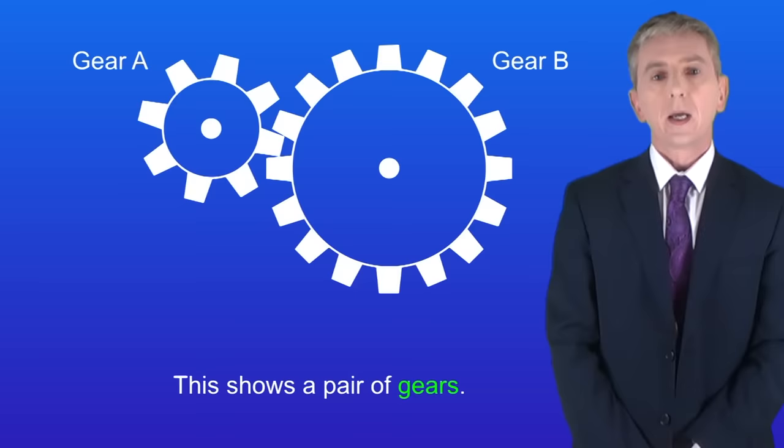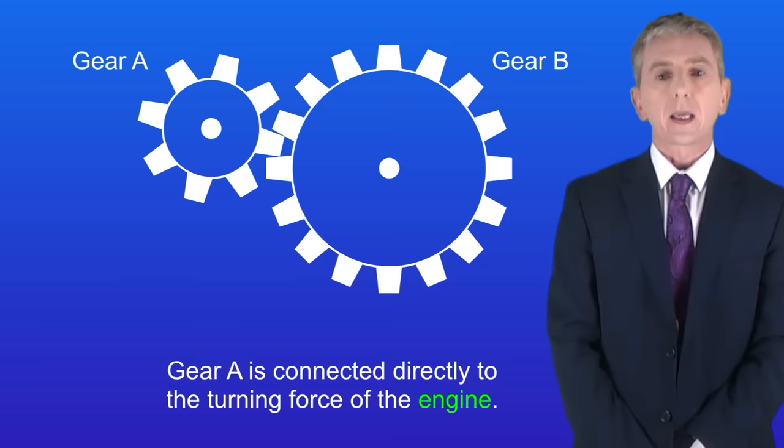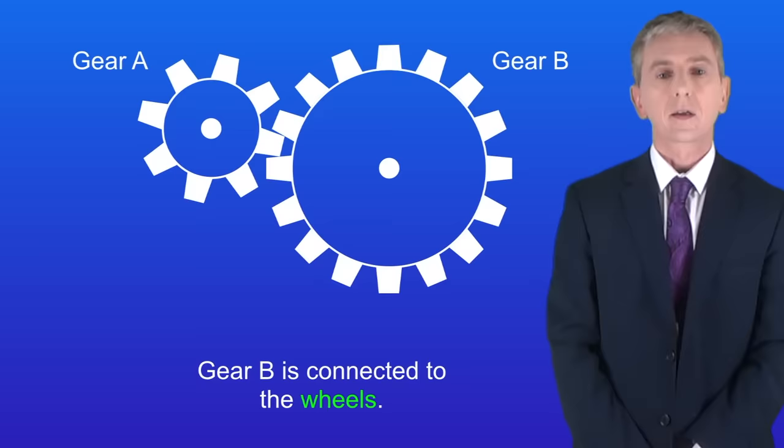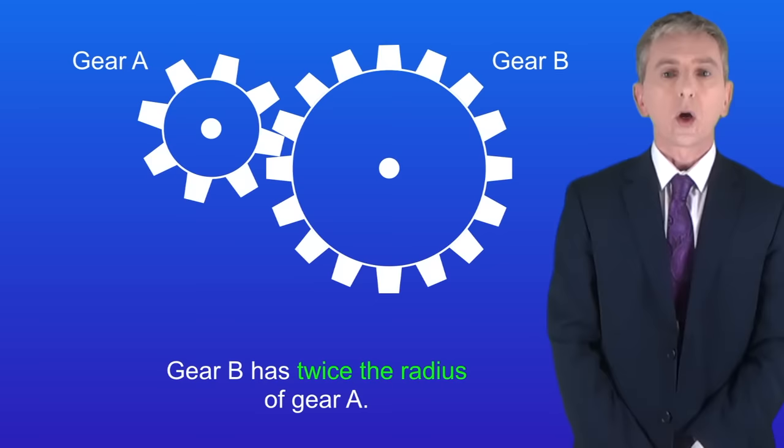We find gears on lots of different machines including cars. I'm showing you a pair of gears here. Gear A is connected directly to the turning force of the engine and gear B is connected to the wheels. So this gear system will transmit the turning force from the engine to the wheels.